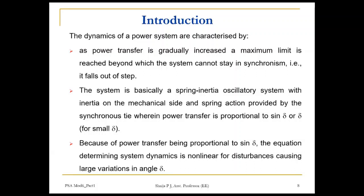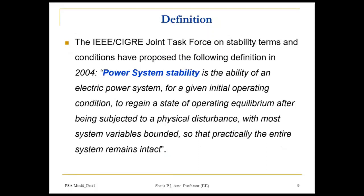The IEEE standard has proposed the power system stability definition as: power system stability is the ability of an electrical power system, for a given initial operating condition, to regain a state of operating equilibrium after being subjected to a physical disturbance, with most system variables bounded so that practically the entire system remains intact.